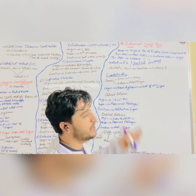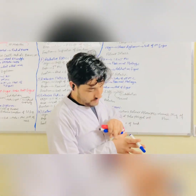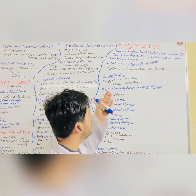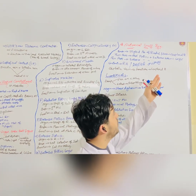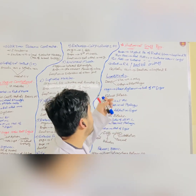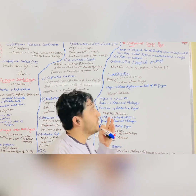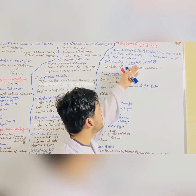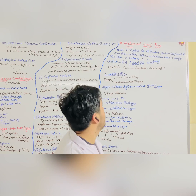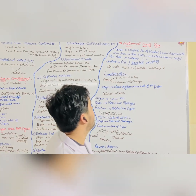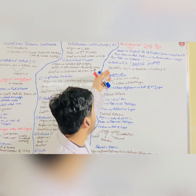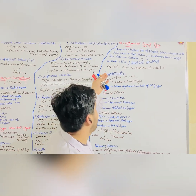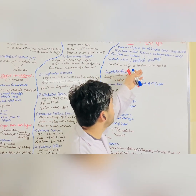Now we are going to discuss the anatomical snuff box. It overlies the scaphoid bone and the radial styloid process. The snuff box has two borders: a thick border containing the abductor pollicis longus and extensor pollicis brevis, and a thin border containing the extensor pollicis longus only. It contains the radial artery, the cephalic vein, and the scaphoid bone. If there is tenderness over the anatomical snuff box, it suggests a scaphoid fracture.